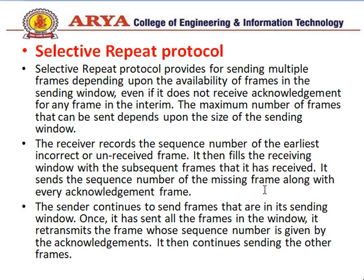The next protocol is Selective Repeat. As the name indicates, only the selected frames or packets are resent. Selective Repeat protocol provides for sending multiple frames depending on the availability of frames in the sending window, even without receiving acknowledgements for every frame. The receiver records the sequence number of the earliest incorrect or unreceived frame, fills its receiving window with subsequent received frames, and sends the sequence number of the missing frame along with every acknowledgement. The sender retransmits only the frame whose sequence number is indicated by the acknowledgement, then continues sending other frames.